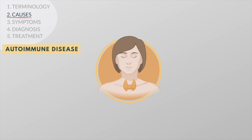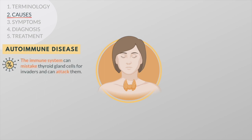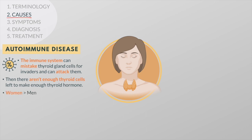In some people's bodies, the immune system that protects the body from invading infections can mistake the thyroid gland cells for invaders and attack them. Then there aren't enough thyroid cells and enzymes left to make enough thyroid hormone. This is more common in women than men. Autoimmune thyroiditis can begin suddenly or develop slowly over years. The most common forms are Hashimoto thyroiditis and atrophic thyroiditis.